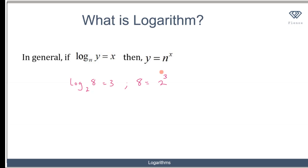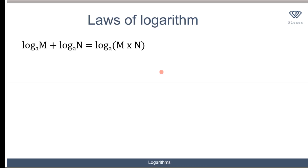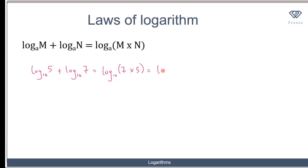Now let's consider the laws of logarithms — how do we manipulate logarithmic expressions? The first law has to do with addition: if you have the logarithm of a number m to base a plus the logarithm of another number n to base a, the same base, that is the same as the logarithm of m times n to base a. For example, log 5 base 10 plus log 7 base 10 equals log 35 base 10.